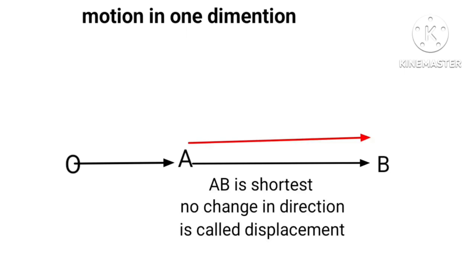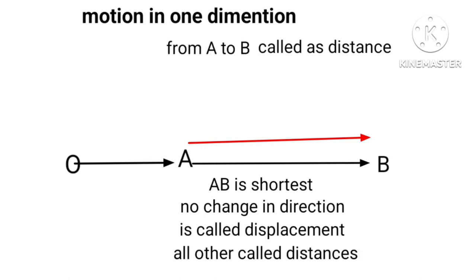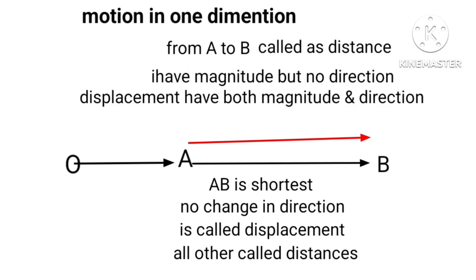So is called displacement. Whereas all other distances from A to B called as distance have magnitude but no direction. Whereas displacement has both magnitude and direction.